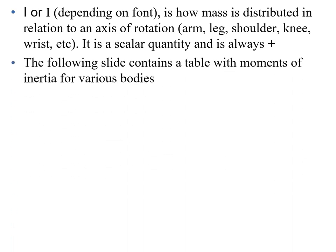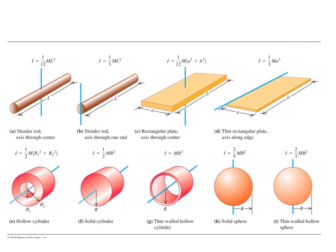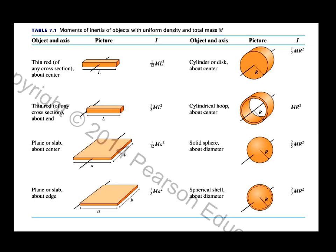The following slide contains a table with moments of inertia for various bodies. We'll basically concern ourselves with the items on the bottom row: the hollow cylinder, the solid cylinder, the thin-walled hollow cylinder, the solid sphere, and the thin-walled solid sphere. Each object has its own moment of inertia. The next slide is simply these objects' moments of inertia from your textbook.